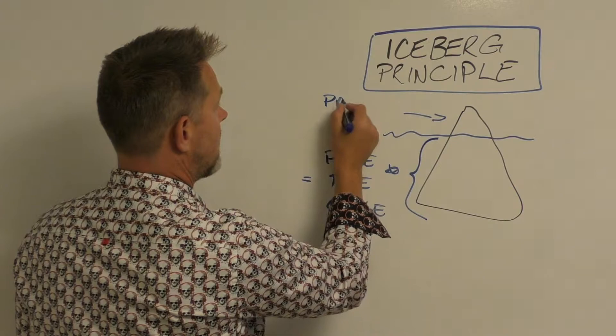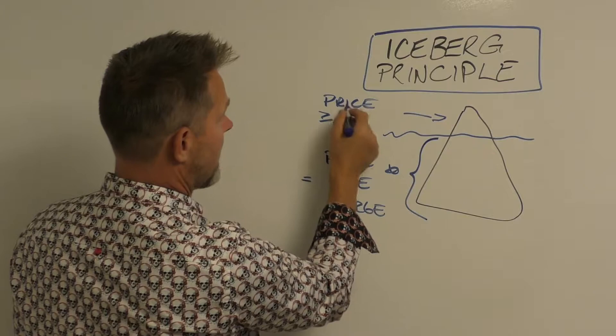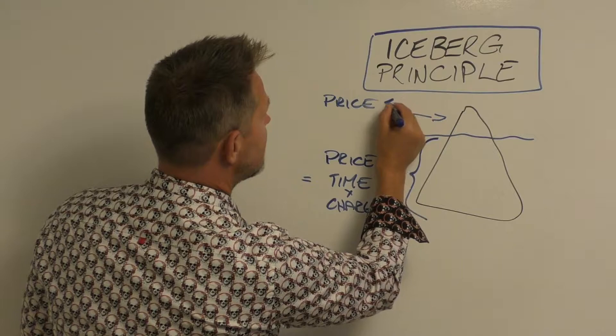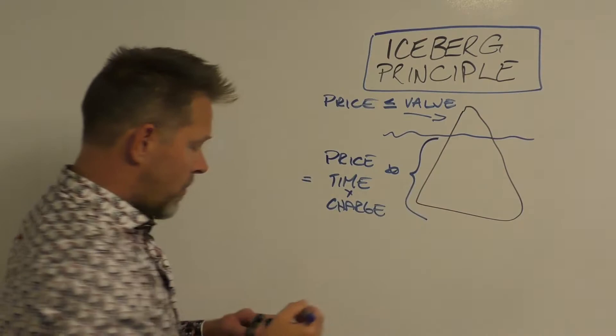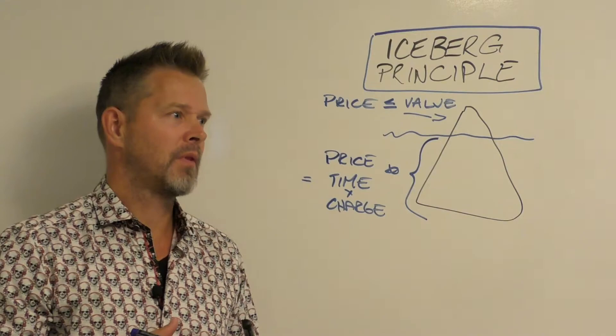And so from a value pricing perspective, actually the price should be equal to or less than the value they receive. So price is less than or equal to the value they receive.